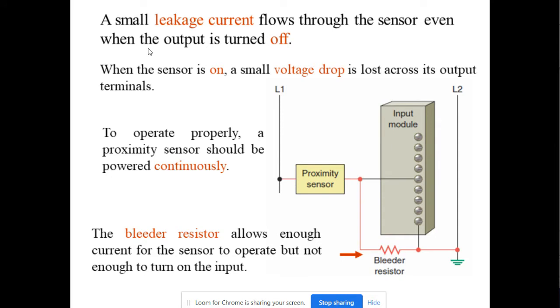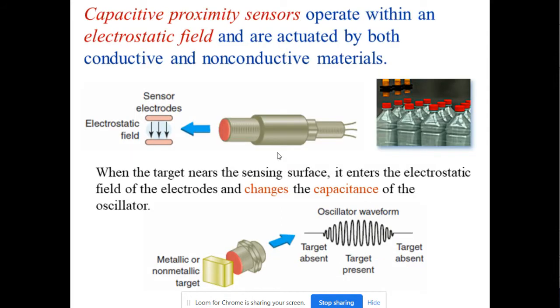A small leakage current flows through the sensor even when the output is turned off. When the sensor is on, a small voltage drop is lost across its output terminal. To operate properly, a proximity sensor can be powered continuously. The bleeder resistor allows enough current for the sensor to operate but not enough to turn on the input. This is one of the ways how we can use this proximity sensor.